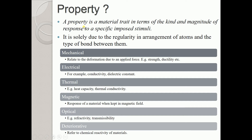Another component is property. A property is a material trait in terms of the kind and magnitude of the response to a specific imposed stimuli. This property exists solely due to the regularity in the arrangement of atoms and the type of bond between them — that is, the pattern of atomic arrangement and the bonding type determine the property.